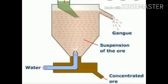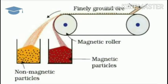The next method is electromagnetic separation. Here we consider whether the ore particles or the impurities are attracted by the magnetic field. Powdered ore particles are placed on a moving conveyor connected to electromagnets. As the conveyor moves, ore particles attracted by the magnetic field fall shorter while the impurities, not attracted, are drifted away.